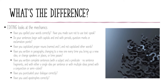With editing, you're looking at the mechanics — the conventions of language. Spelling: have you spelled your words correctly? Have you made sure not to use text speak? The letter U is not acceptable in published writing. Do your sentences begin with capitals and end with ending punctuation — periods, question marks, or exclamation points? Have you capitalized proper nouns and not capitalized other ones? Have you capitalized I? Have you written in paragraphs? You should be changing to a new paragraph every time you bring up a new idea. Each paragraph should be one idea with its support and description.